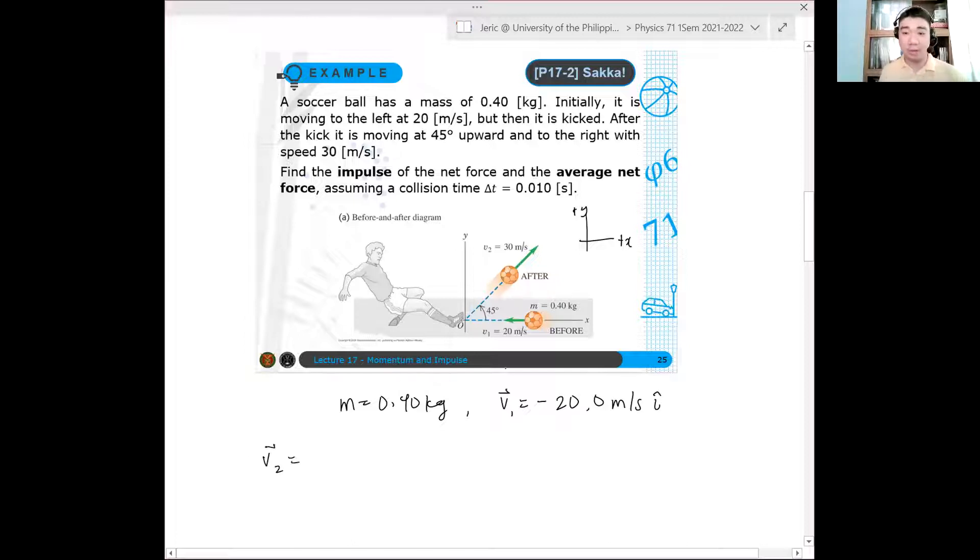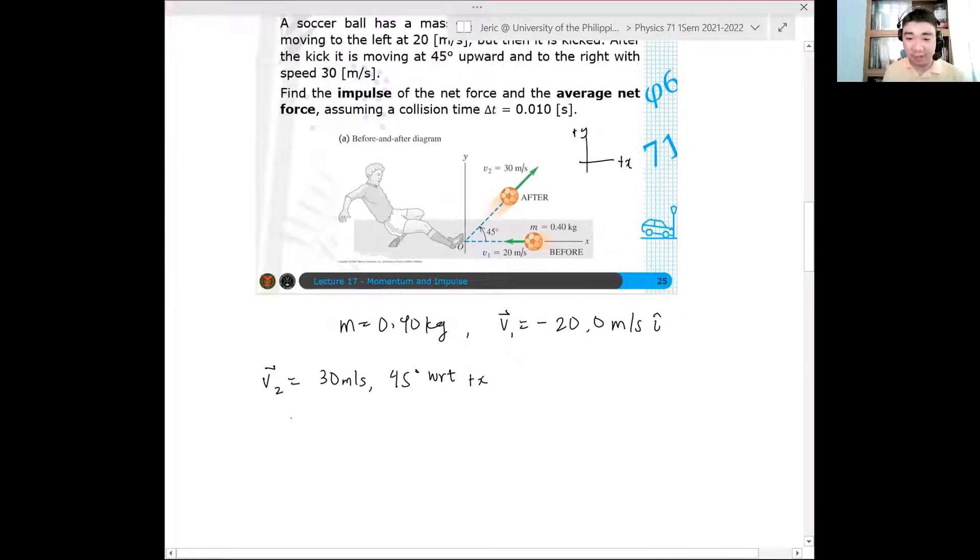Now, the V2 here is now equal to what? It is after the kick, it is now moving at 45 degrees upward and to the right with speed of 30 meters per second. So this is 30 meters per second, 45 degrees with respect to positive x. Now, of course, what we want here is a vector in unit vector form. So what we need to do is to first convert this into unit vector form. This is the magnitude of V and this is the direction. So we have 30 meters per second cosine of 45 degrees i hat plus 30 meters per second sine of 45 degrees j hat.